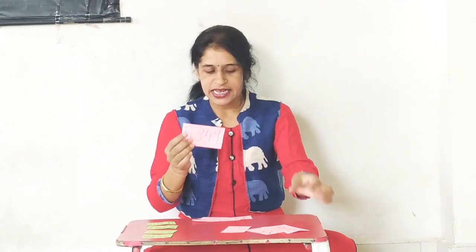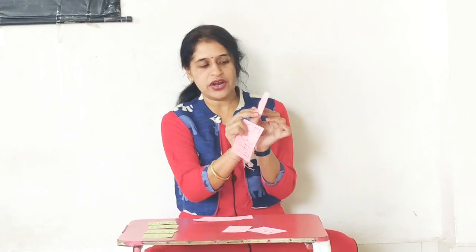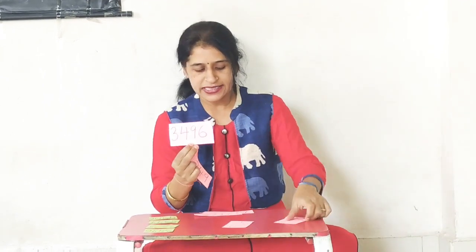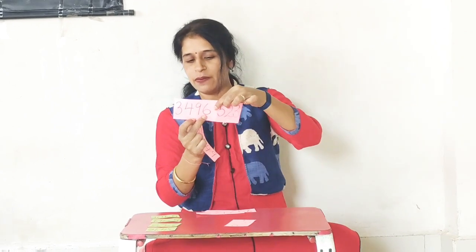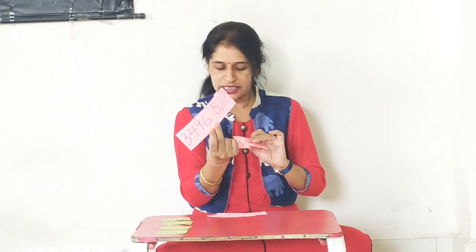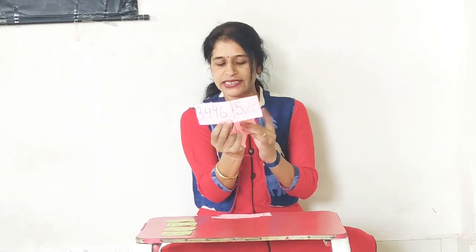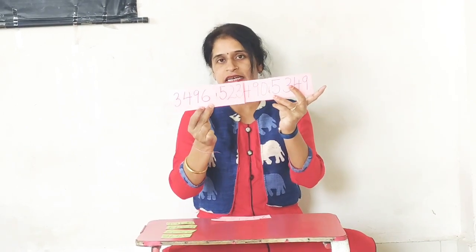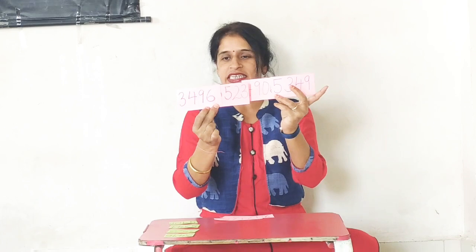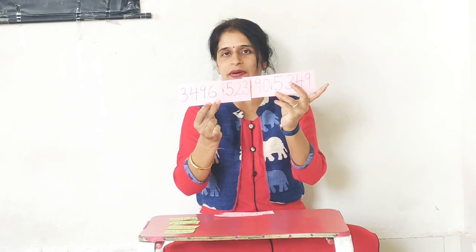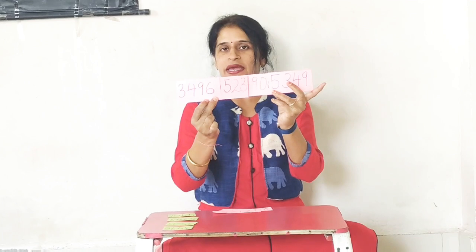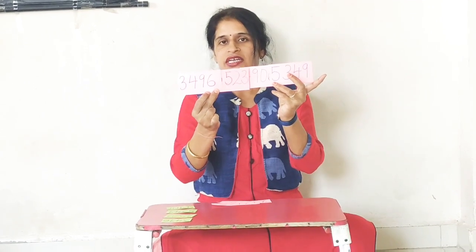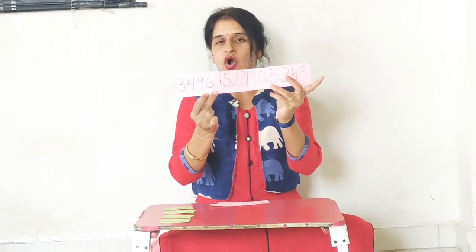So the ascending arrangement is: first 3496, then 3523, then 4906, and last 5349. We start from the smallest number and come to the biggest number. This is the ascending order.